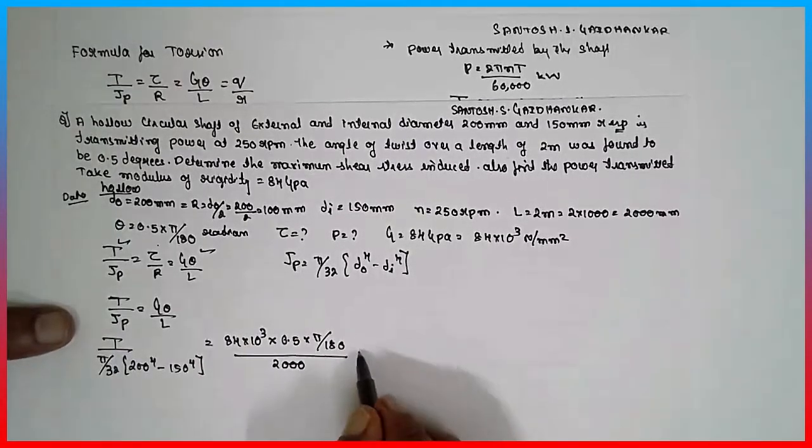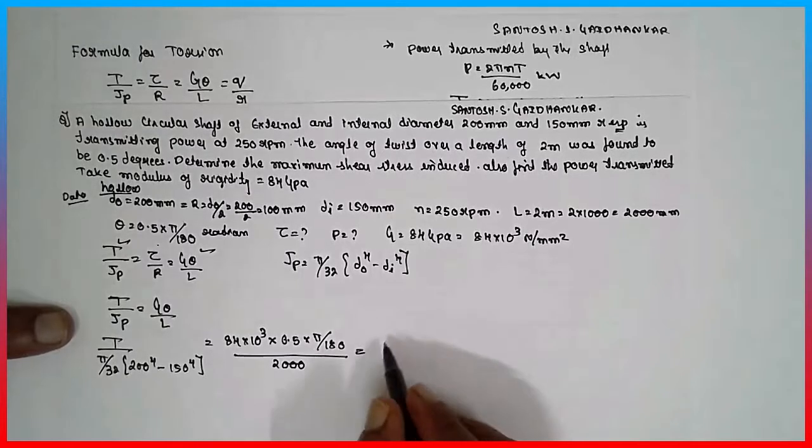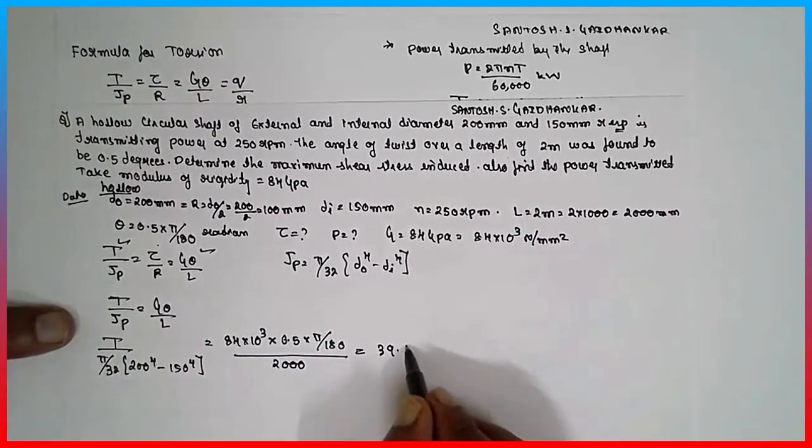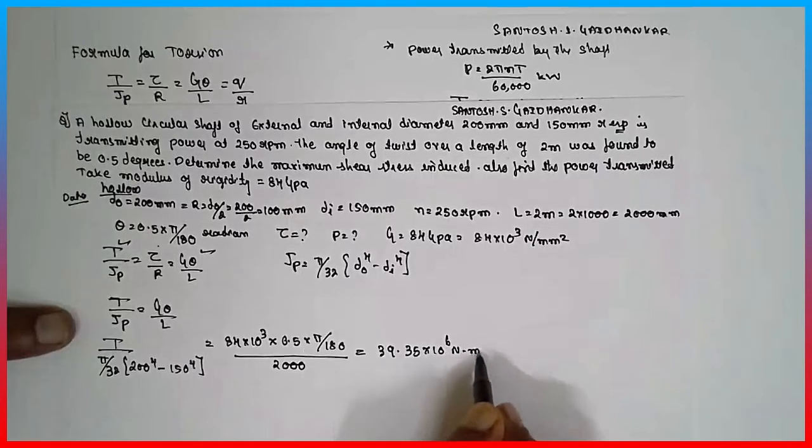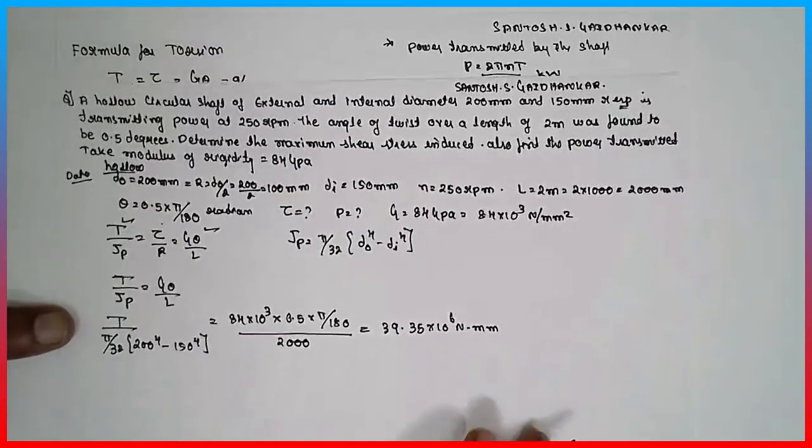Cross multiply, you will get 39.35 into 10 raised to 6 Newton-millimeter. This is the torque obtained.